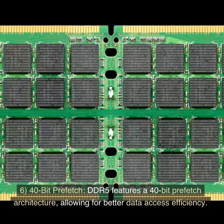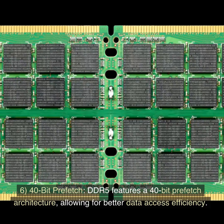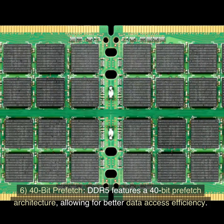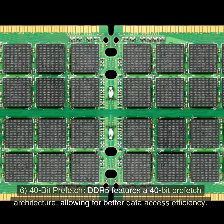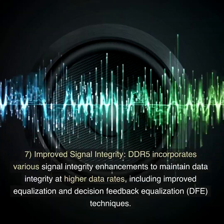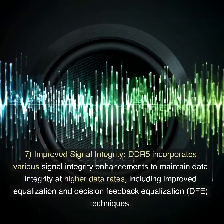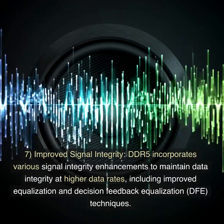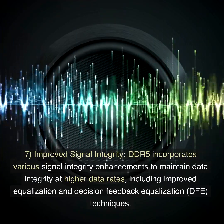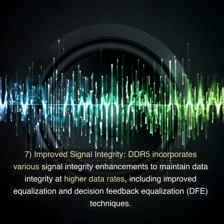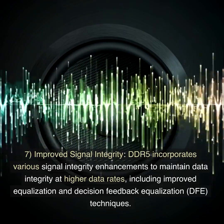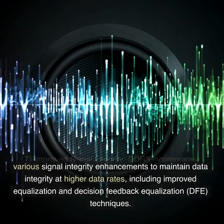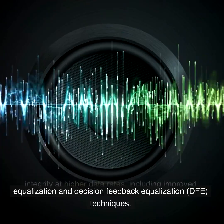Sixth, 40-bit Prefetch. DDR5 features a 40-bit prefetch architecture, allowing for better data access efficiency. Seventh, Improved Signal Integrity. DDR5 incorporates various signal integrity enhancements to maintain data integrity at higher data rates, including improved equalization and decision feedback equalization techniques.